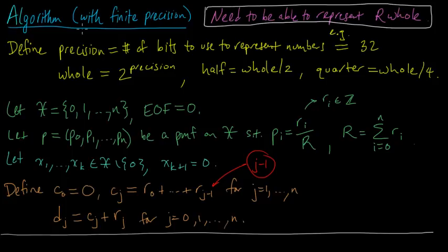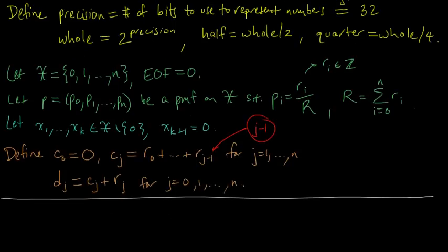In the previous video, we set everything up for the finite precision version of the arithmetic coding algorithm, and in this video we're going to write down the encoder. We've done all of the hard work for the finite precision encoder when we modified the infinite precision encoder to integrate those rescaling operations into the process of finding the interval from A to B. So the finite precision encoder is going to look very similar to that modified infinite precision encoder, except there will be some additional modifications to account for the fact that we're going to be using integers instead of real numbers.